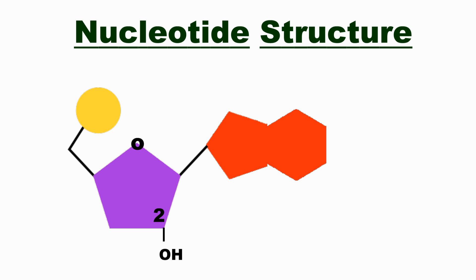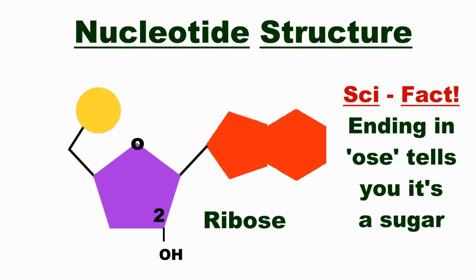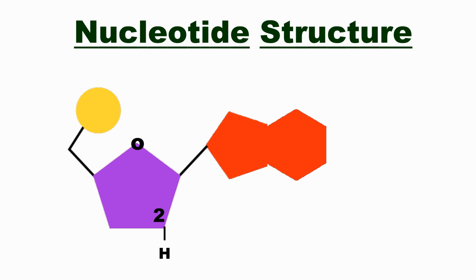If you have a hydroxyl group attached, then this is the sugar ribose, used for RNA nucleotides. If you only have a hydrogen attached, and lack that one extra oxygen atom, then this is considered deoxyribose, used for DNA nucleotides.